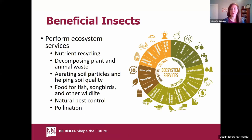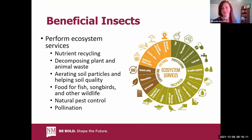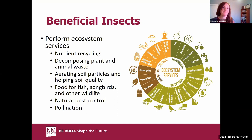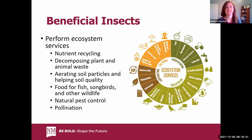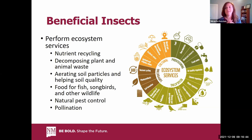Let's start with a broad overview of what beneficial insects are. They are any insect that's helping to perform an ecosystem service — a property of the ecosystem that benefits humans either directly or indirectly. Insects help us with nutrients, recycling, decomposing plant and animal waste, aerating soil particles, and supporting soil quality. Other animals like fish and birds also eat insects. Today we'll focus on natural pest control and pollination.